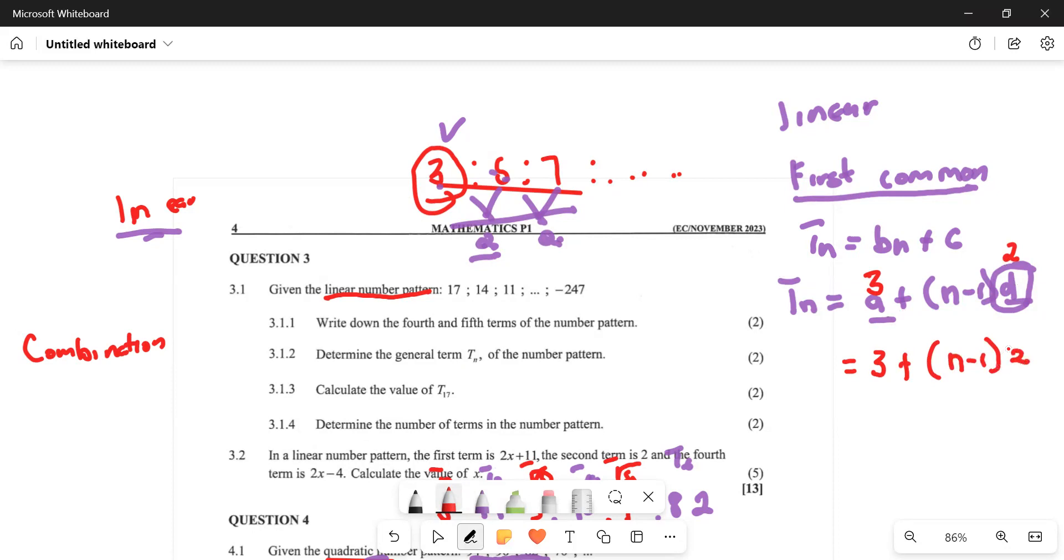Now you need to remove the bracket. This one multiplied by n is 2n, this one multiplied by -1 is -2. So we have 2n, and then plus 3 minus 2. This one and this one are like terms. And then 3 minus 2 gives us 1. So we have 2n plus 1. This is the general term.